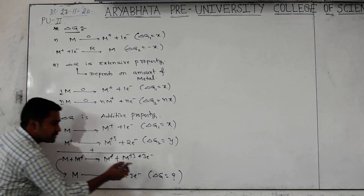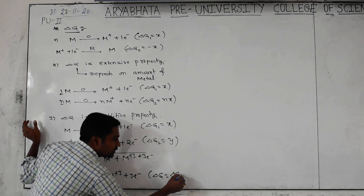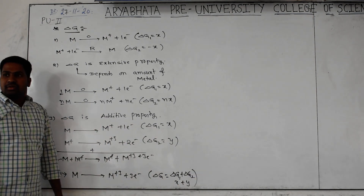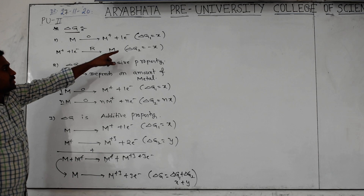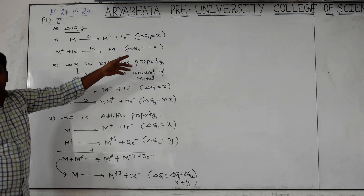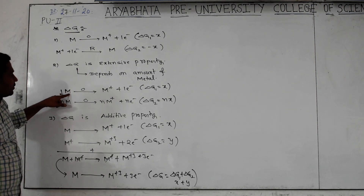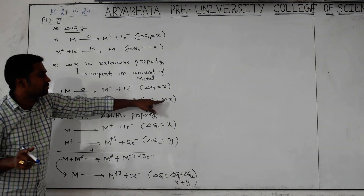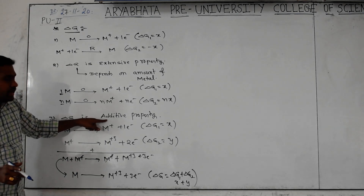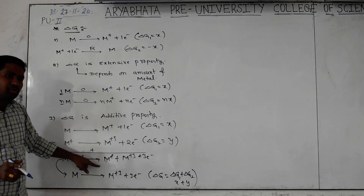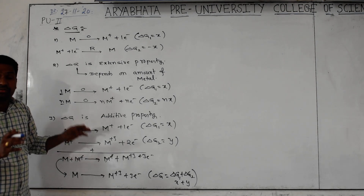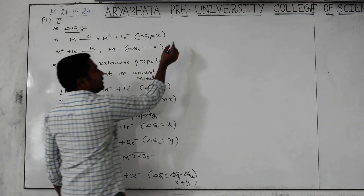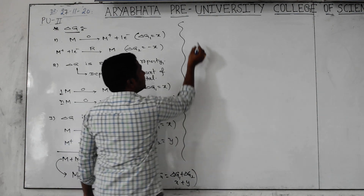Then we can apply the additive property: delta G equals delta G1 plus delta G2, nothing but X plus Y. While making a reverse reaction, the delta G sign becomes inverse — minus. It is the multiplicative property: whatever equation is given, if the whole equation is multiplied with some common number, the same multiplication will be available for delta G. And for the additive property, if two equations are given and a third delta G value is asked, we understand how it is obtained by addition, so delta G equals G1 plus G2.